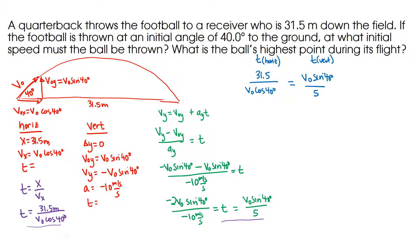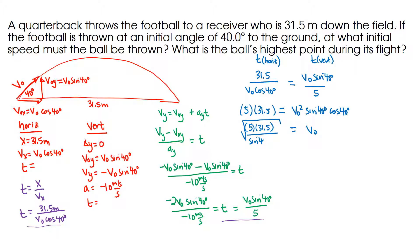So T from the horizontal is 31.5 over V0 cosine of 40 degrees, set equal to T from the vertical, which is V0 sine of 40 degrees over 5. I need to solve for V0. Cross-multiplying: 5 times 31.5 equals V0 squared times sine of 40 times cosine of 40. So V0 equals the square root of 5 times 31.5 divided by the quantity sine of 40 times cosine of 40, giving V0 equals 17.8 meters per second.